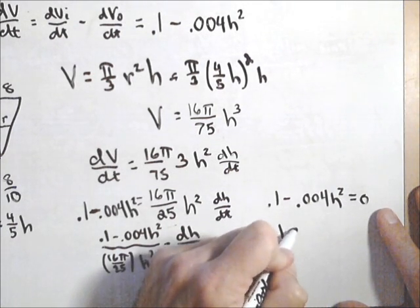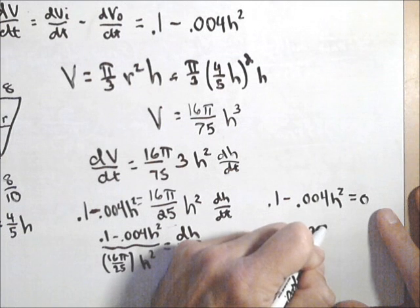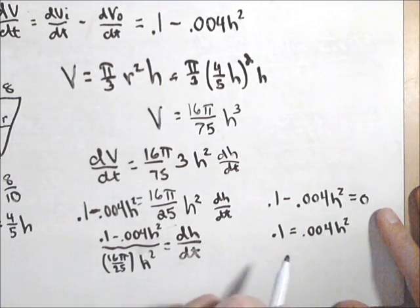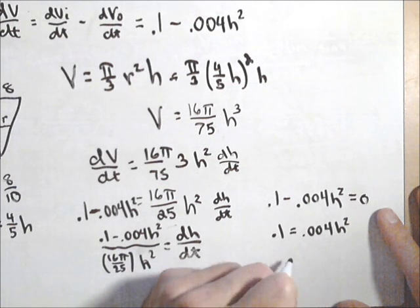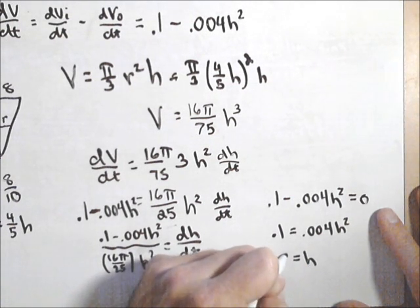So we get 0.1 equals 0.004h². And if we divide this and take the square root, what we end up getting is h equals 5.